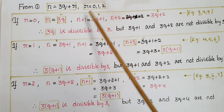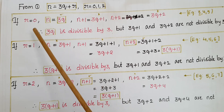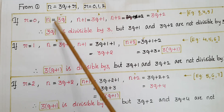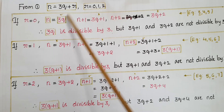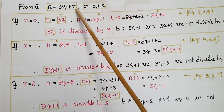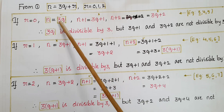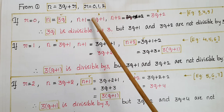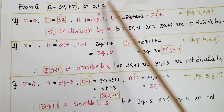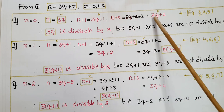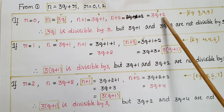From this, n is in the form of 3q + r where r can be 0, 1, or 2. Applying r = 0 first: n = 3q, n+1 = 3q + 1, and n+2 = 3q + 2.